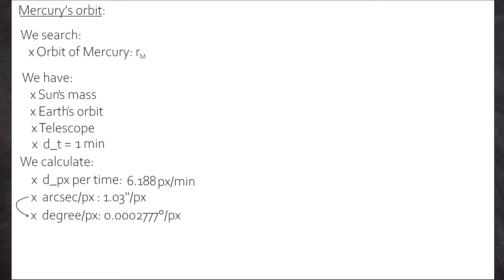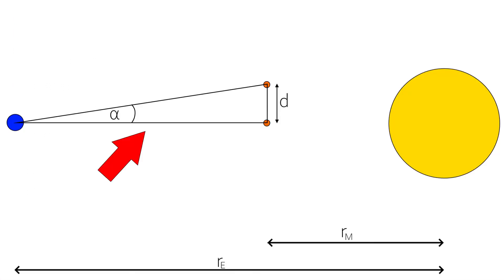So in summary, we know that Mercury moved 0.000277 degree per pixel. And we know the average pixel movement per time. That was 6.1886 pixels per minute. And we can't conclude the speed of Mercury just by that. No.